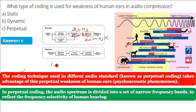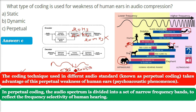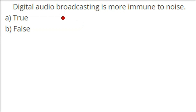This technique takes advantage of the psychoacoustic phenomenon — the perceptual weakness of human ears. Sounds recorded above 20 kHz or below 20 Hz, which fall outside the range of human hearing, are truncated or deleted. That is how audio compression and decompression is achieved.